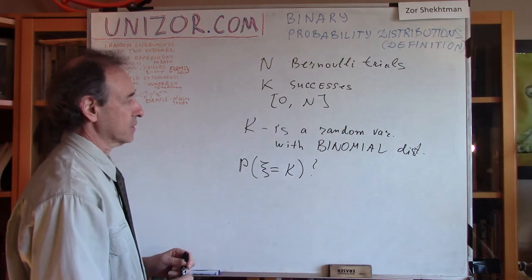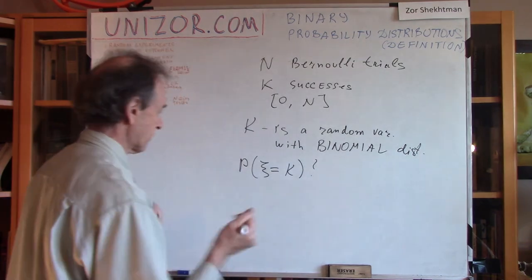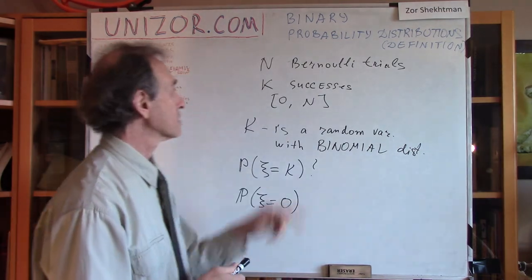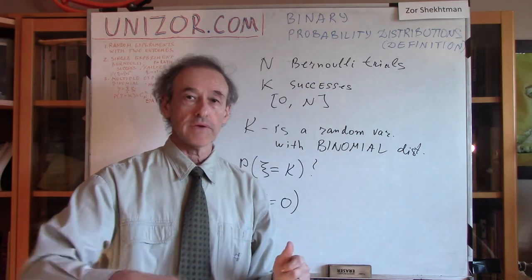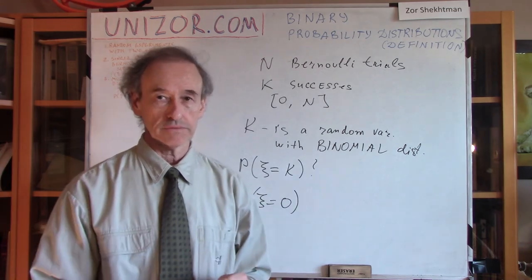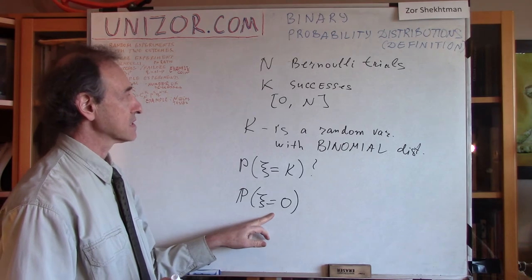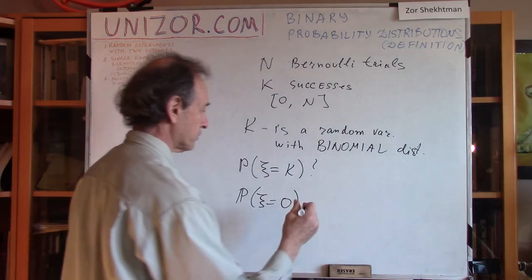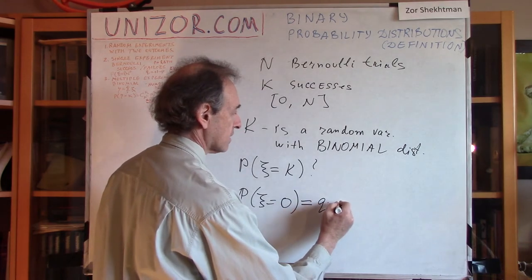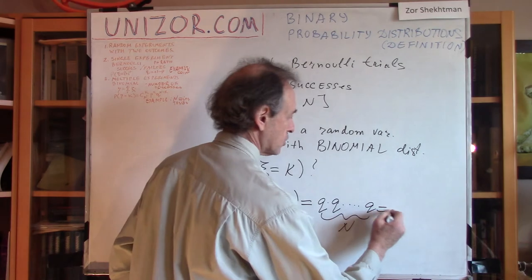Let's calculate the easy cases first. The probability of our random variable equal to 0 means all N Bernoulli trials resulted in failure: failure, failure, failure. Since they are all independent, the probability is Q times Q times Q — that is Q to the power N. Similarly, the probability of C equal to N means N successes, giving P to the power N. This is a combinatorial problem we have already solved.